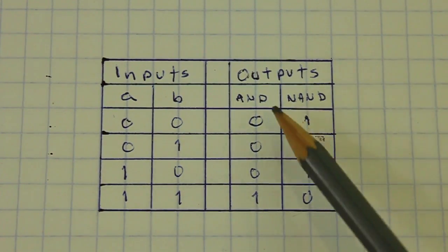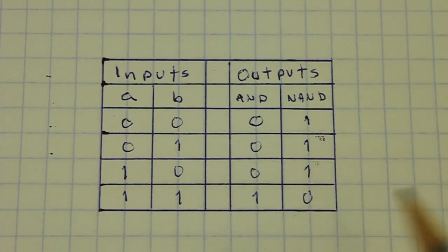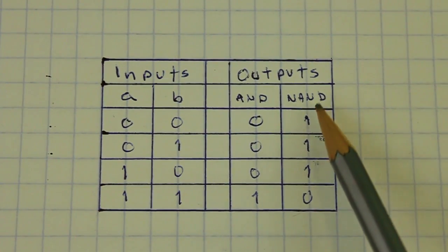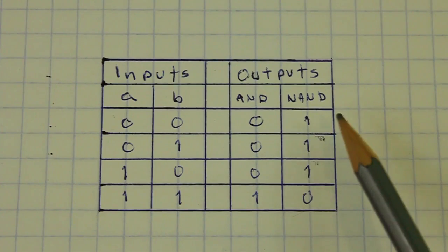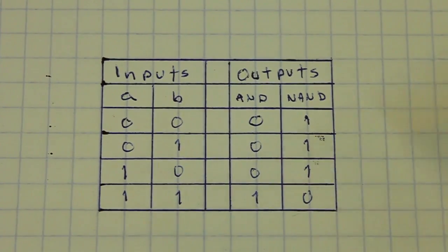As you can see, the output AND is always zero, unless both A and B are one. And of course, NAND is always one, unless we have A and B at the state one.